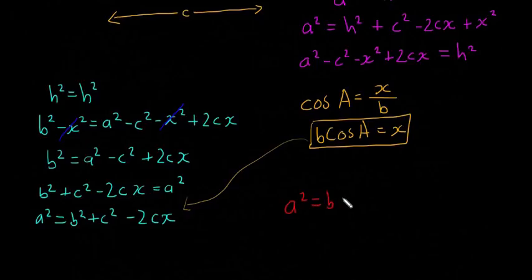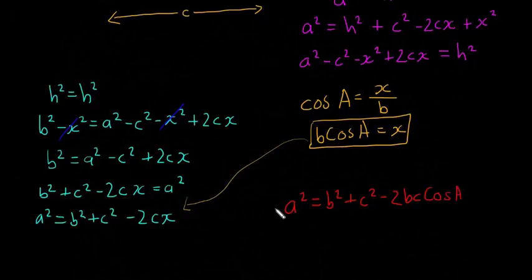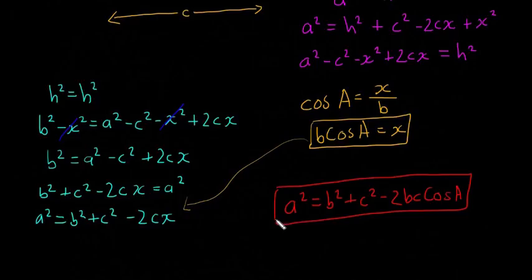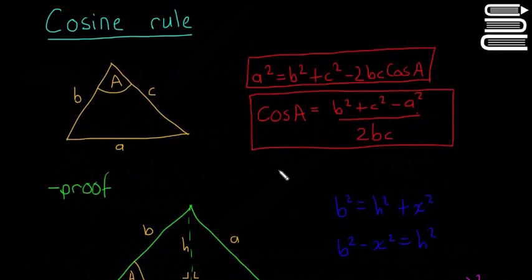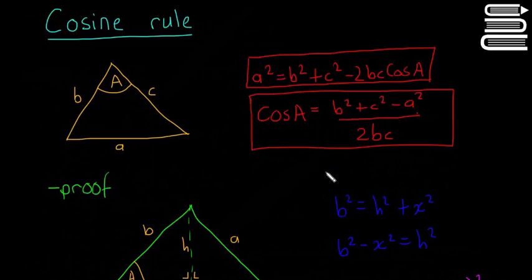Substituting gives the final result: a² = b² + c² − 2bc·cos A. That completes the formal proof — everything you need to prove the cosine rule in the Leaving Cert. Make sure you know how to get from the standard form to the rearranged form for finding angles. The next video will look at some examples of how to use the cosine rule.